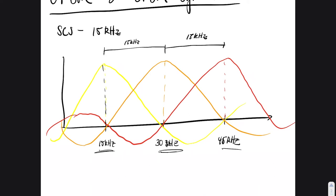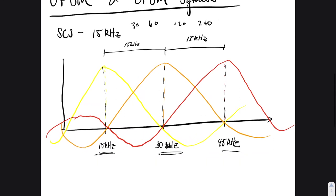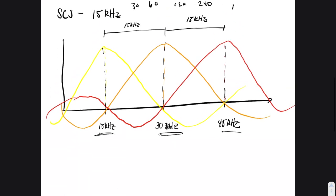So that's what defines this subcarrier spacing. We can have 15, 30, 60, 120, 240 kHz, and probably beyond — and probably even smaller values too. Going into the details of why you might use different SCS values is best left for another time. This gets into a concept called numerology — I'd suggest looking into '5G numerology' for more resources on the web.